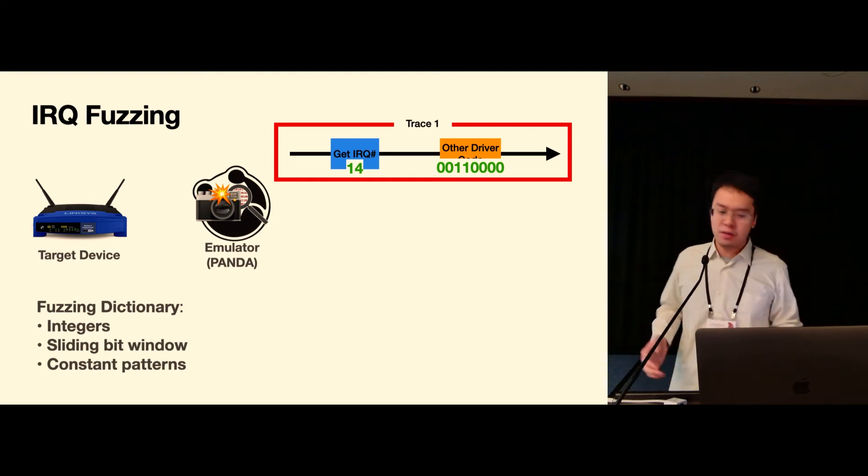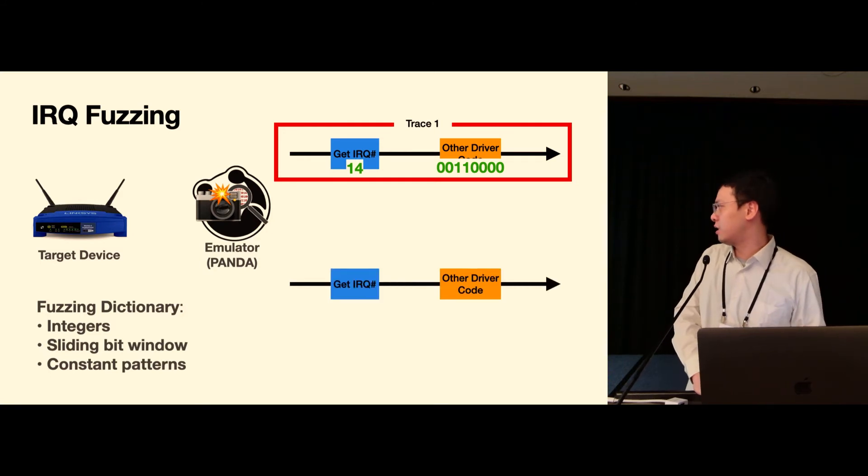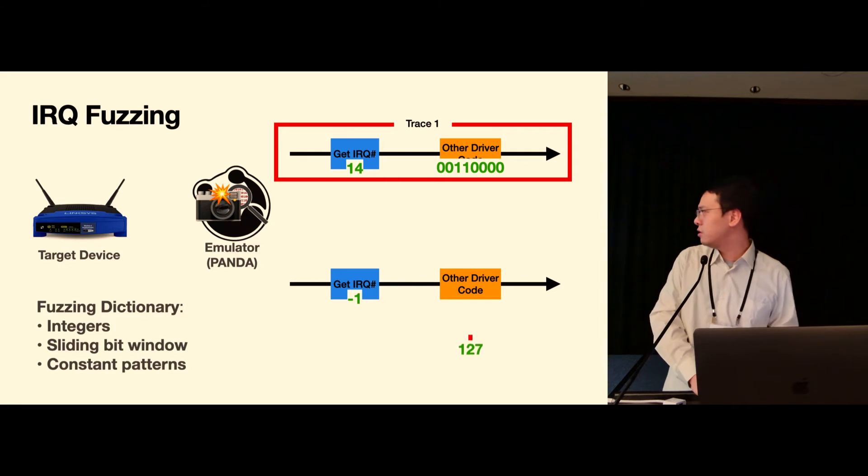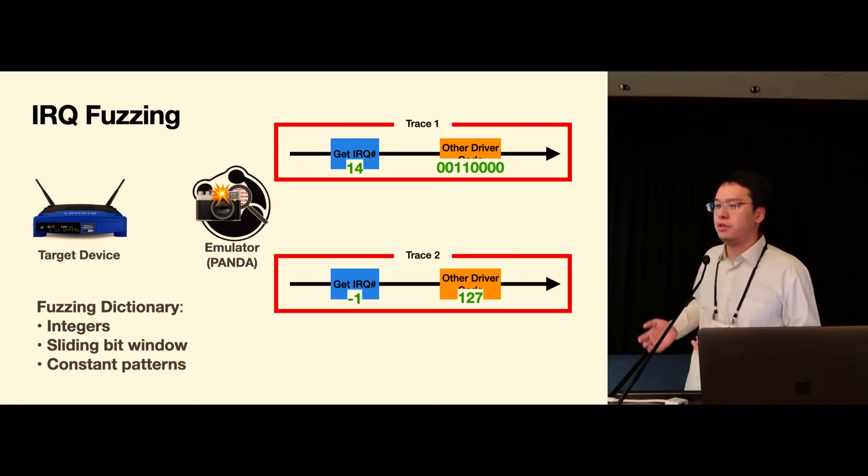But for either way we'd want to continue fuzzing and start another round of fuzzing by raising another IRQ exception and feed it with another sequence of dictionary inputs, until we've collected enough traces which would cover all the registered interrupt handlers.